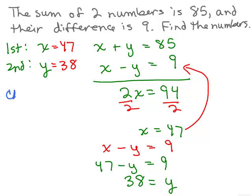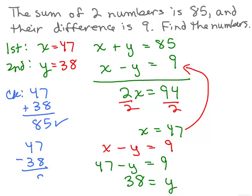So I know that y is 38. Now I've got to check it. Their sum, it says it's supposed to be 85, so let's see. I add up and I got 85, and it says their difference was 9, so now let's take the difference, got 9, so it checked out.